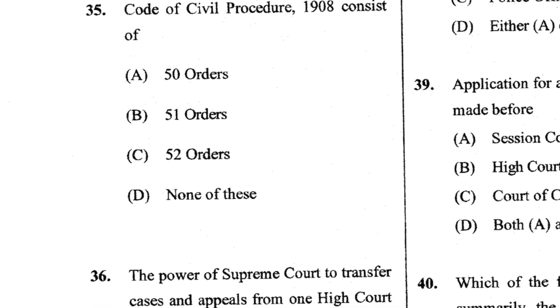Question 35: CPC consists of how many orders? 51 orders. B is the answer.